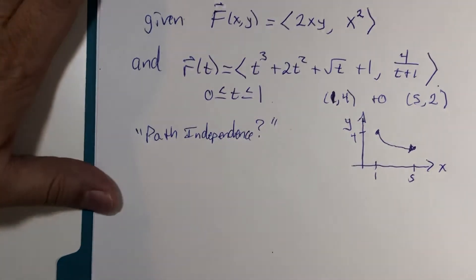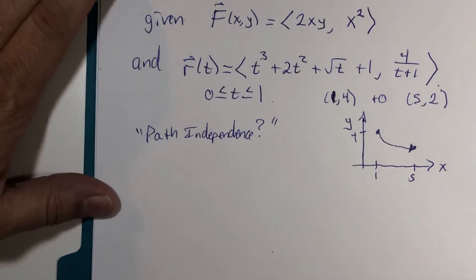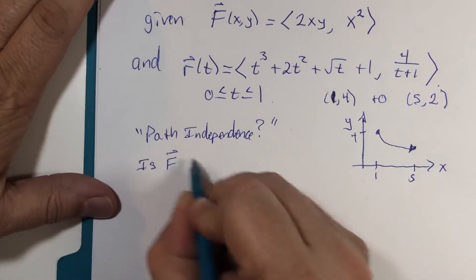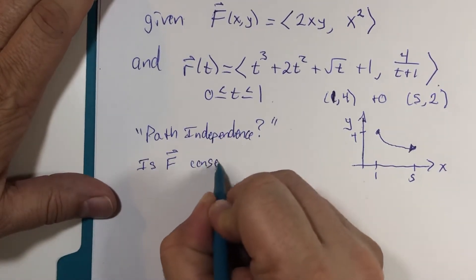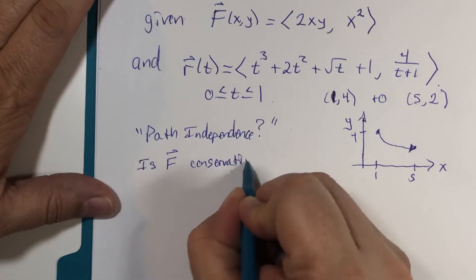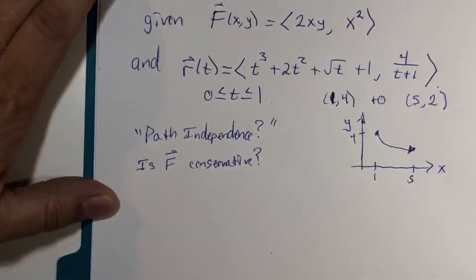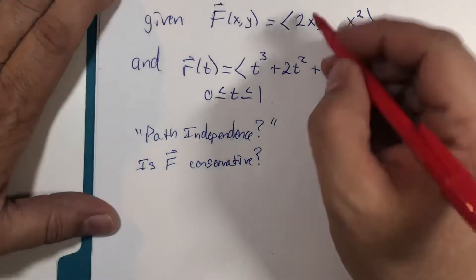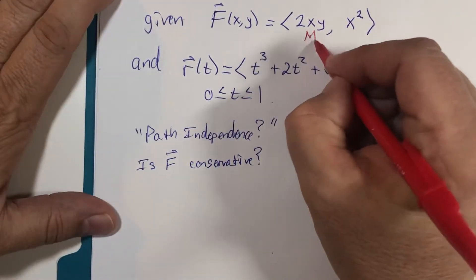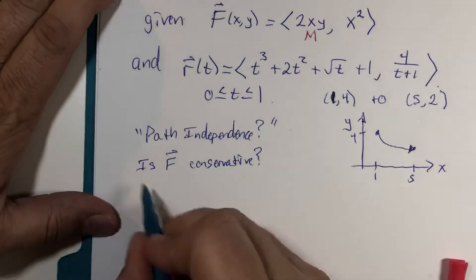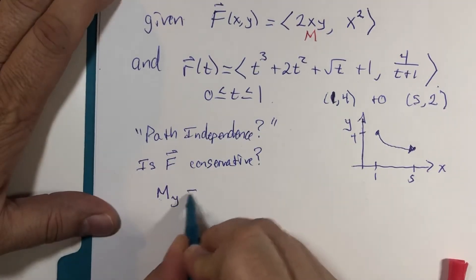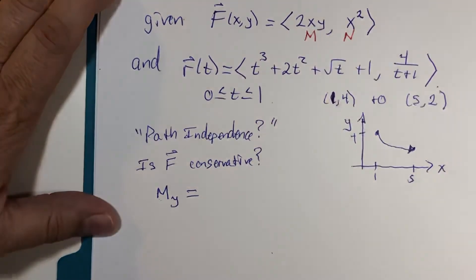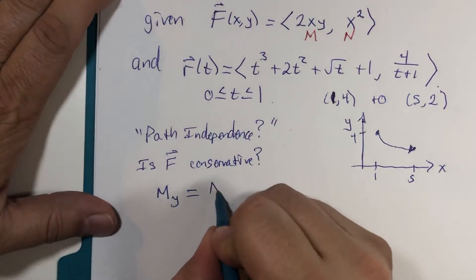And in order for that to happen or take place, we have to ask, is the vector field conservative? So, does the m component, does its y derivative equal the n component's x derivative?